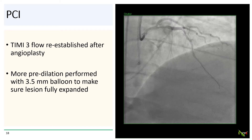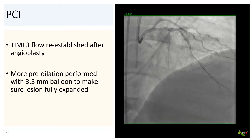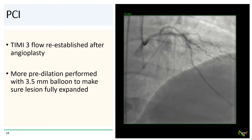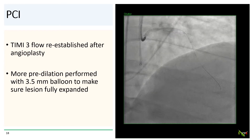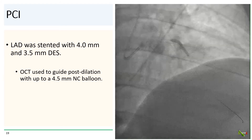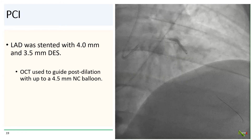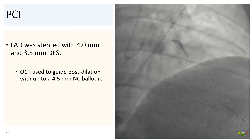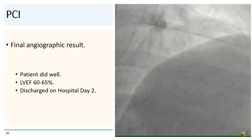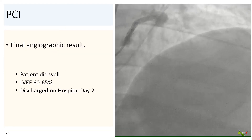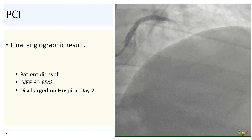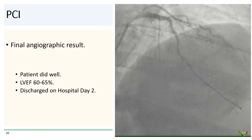TIMI-3 flow was restored after angioplasty. We did more predilation with up to a 3.5 millimeter balloon before trying stents to make sure that the lesion could be fully expanded. We then stented the LAD with 4.0 and 3.5 millimeter DES. We used OCT to guide post-dilation, which we took up to a 4.5 millimeter NC balloon. We had a very satisfactory final angiographic result. The patient's EF fortunately remained preserved, he healed well, and went home on hospital day two.